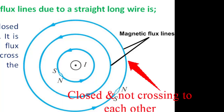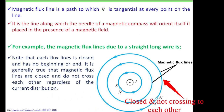As you can see in this figure, each flux line is closed and has no beginning or end, and they do not cross each other, regardless of the current distribution.